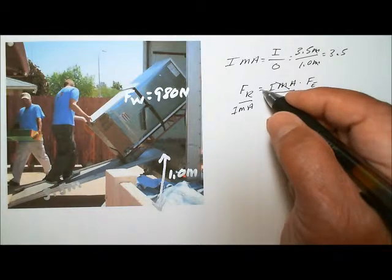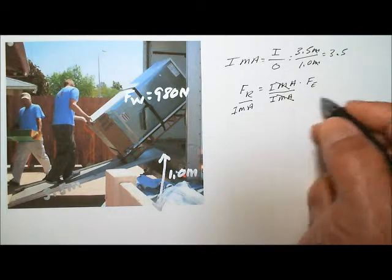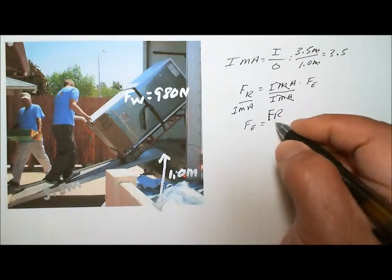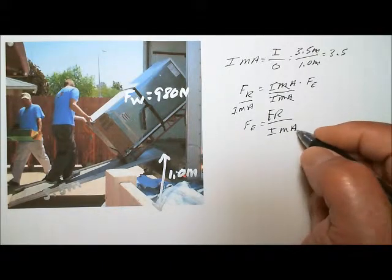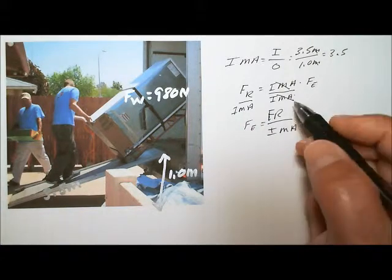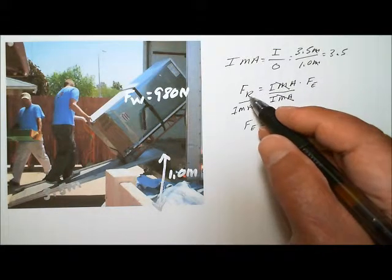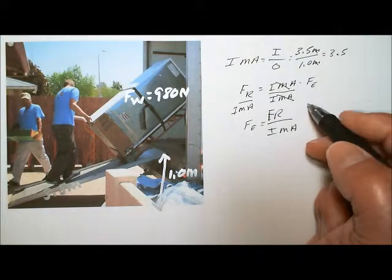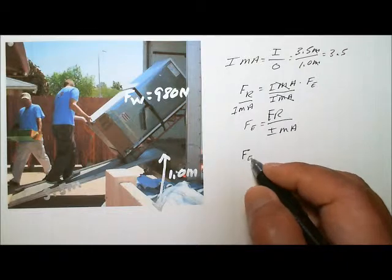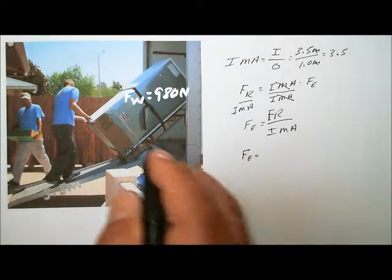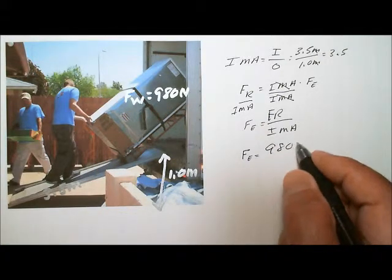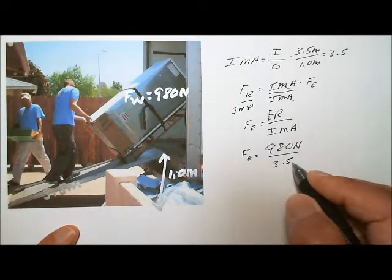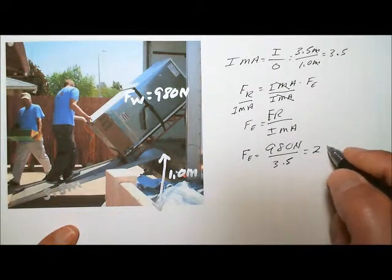The force of effort equals the resistance force divided by the ideal mechanical advantage. This makes sense: if IMA multiplies effort to give resistance, then it must divide resistance to give effort, because they're on opposite sides of the machine. So, force of effort equals 980 newtons divided by 3.5, which gives us an effort force of 280 newtons.